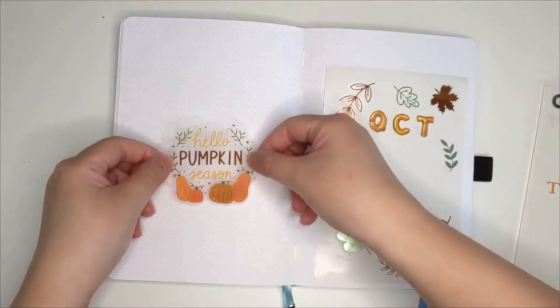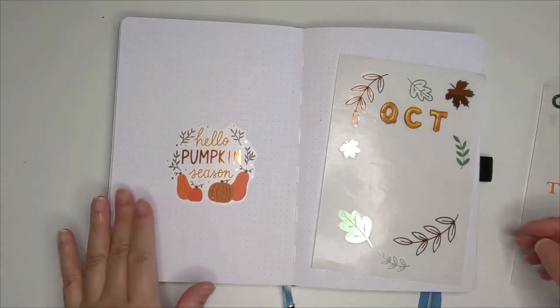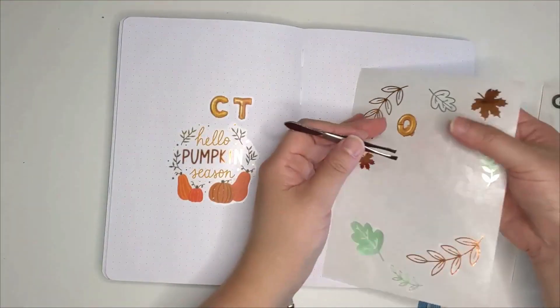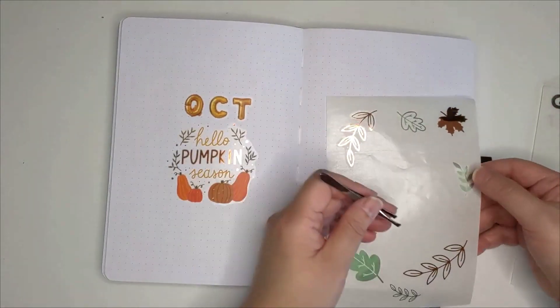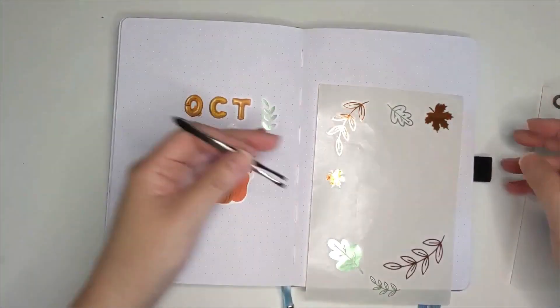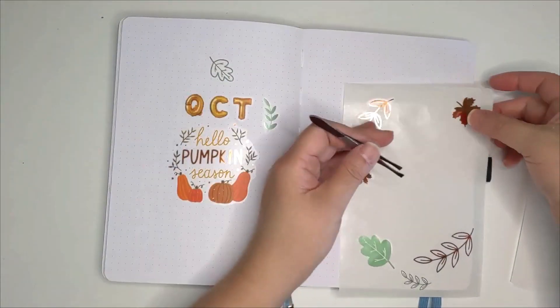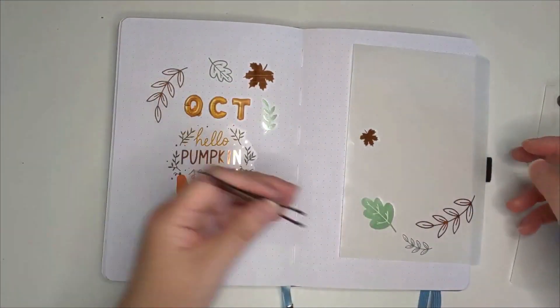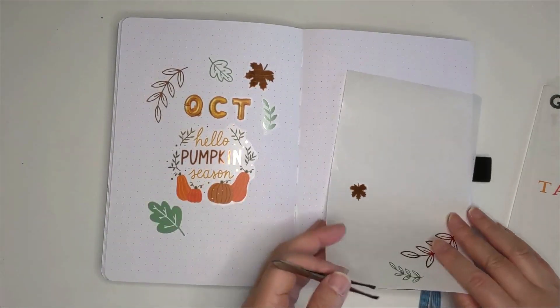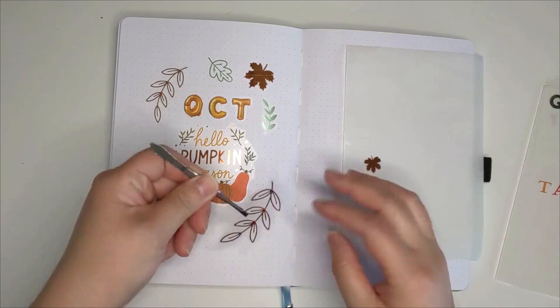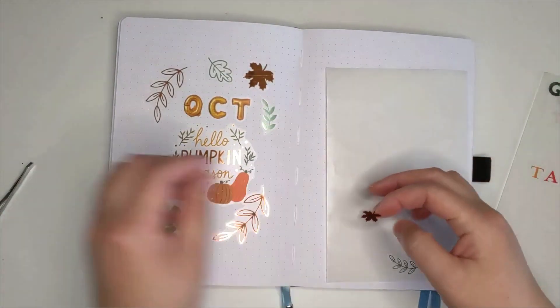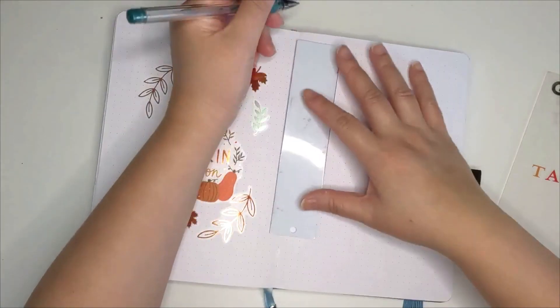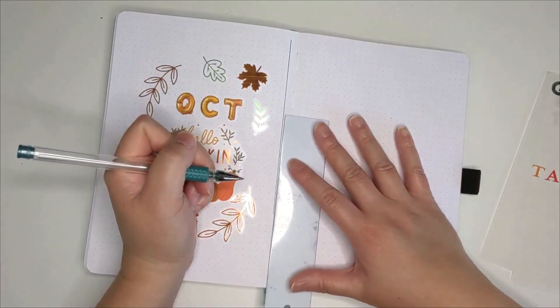For the cover page, I picked out some pumpkins and leaves stickers to decorate. I started with the main sticker with the words first, made sure that it was more or less centralized, and then followed by the month letters. For the leaves, I tried to balance out the size and colors so that it's more or less symmetrical. As a final touch, I decided to draw a border using a metallic green pen.